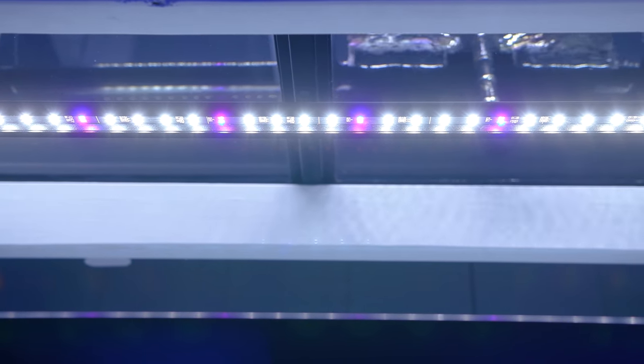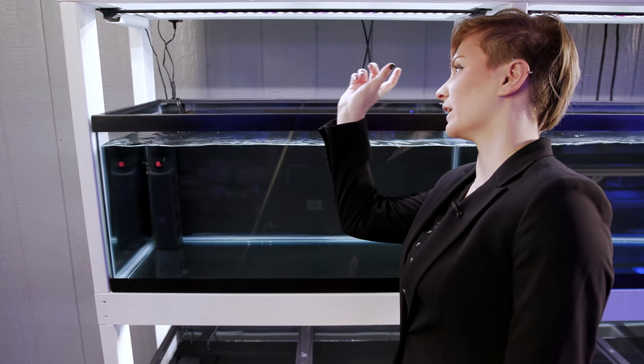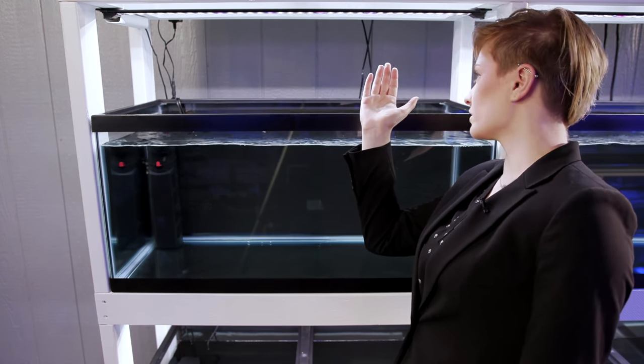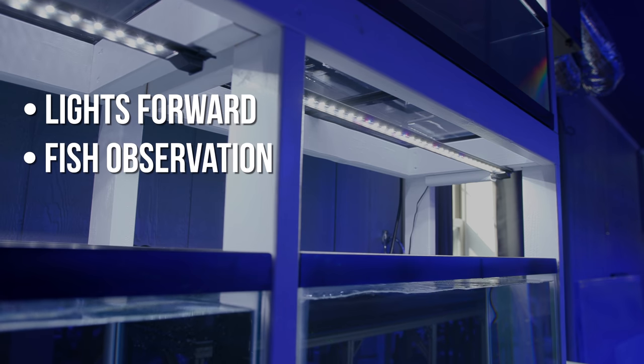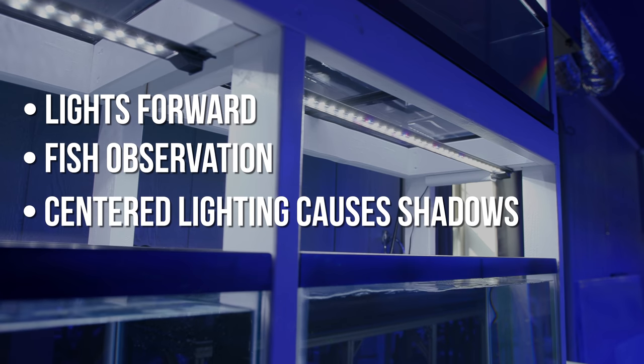Each of these tanks has its own separate light strip, and you may be able to tell that it's more situated towards the front of the tank more than the back or the middle of the tank. That's just because we want to see the fish even when they're up close, just so we can observe them and make sure they aren't sick, don't have any parasites, that sort of thing. Now we're going to go back behind here and show you guys where all of that stuff plugs in.